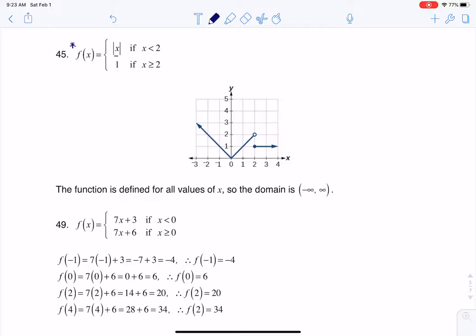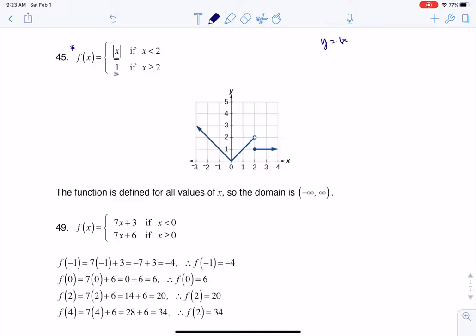So what I want to do is graph each of these pieces individually. Let's think about the absolute value of X. That's one of those toolkit functions that just based on the equation we should know the general shape of the graph and it's a V.